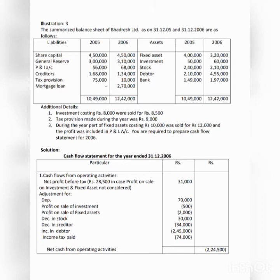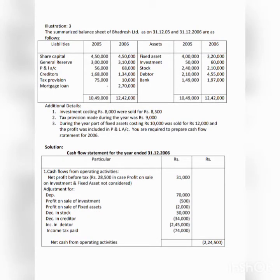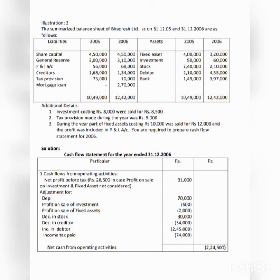In this problem, first we want to calculate net profit before tax and extraordinary items. The profit and loss balance shows an opening balance of 56,000 and a closing balance of 68,000, giving an increase of 12,000. So first, take the net profit after tax as 12,000. Then add any amount transferred to general reserve — the opening balance is 3,00,000 and closing balance is 3,10,000, so there is a transfer of 10,000. Add this difference to the net profit.